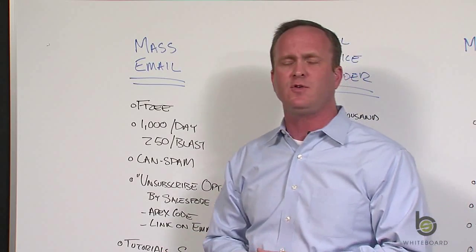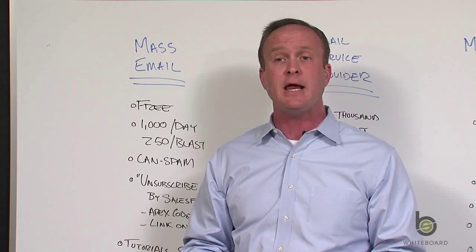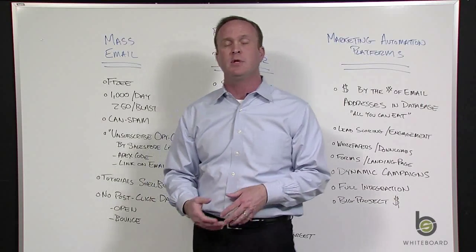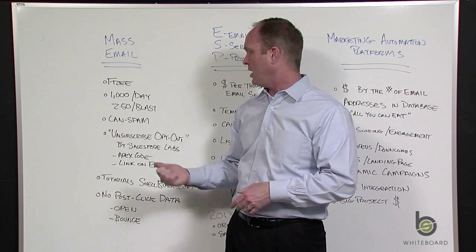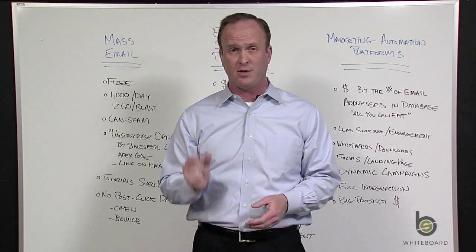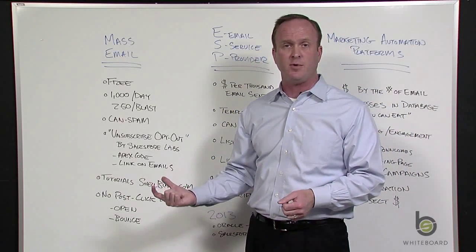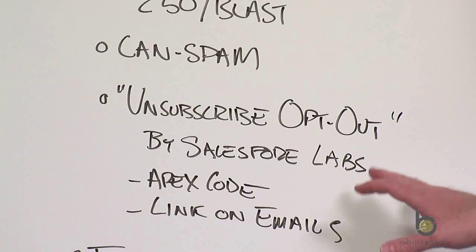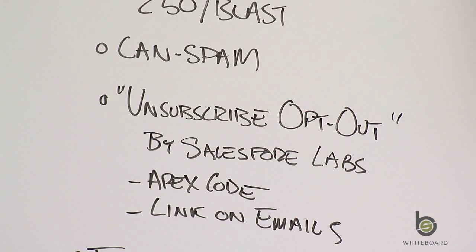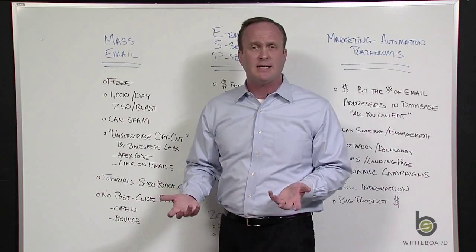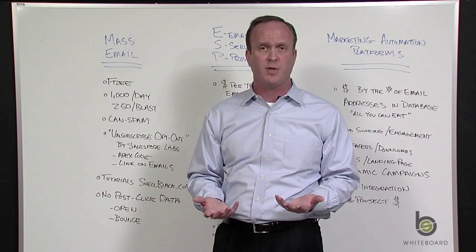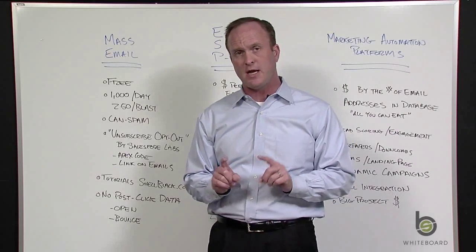Another constraint of using Salesforce for mass emails is there's no native CAN-SPAM compliant way to do that — no unsubscribe button you can put in your email. There is an option on the AppExchange: a little app called Unsubscribe Opt Out, actually made by Salesforce Labs. It's a piece of Apex code that lets you put an unsubscribe link at the bottom of your emails and takes care of CAN-SPAM compliance. It doesn't come out of the box — you have to download and use that Apex code. If you're interested in doing mass emailing from Salesforce and want to learn HTML templates, I've got tutorials on shellblack.com and will put links in the transcription notes.